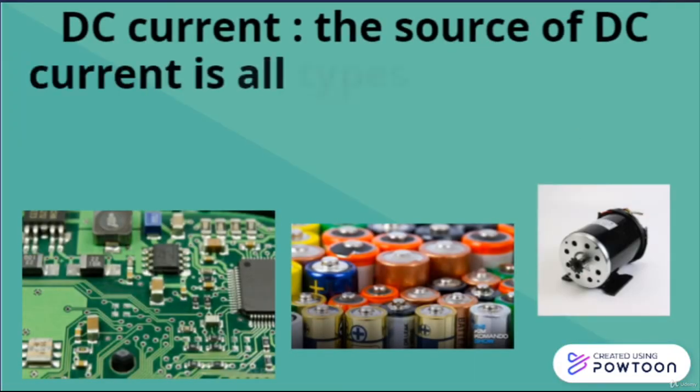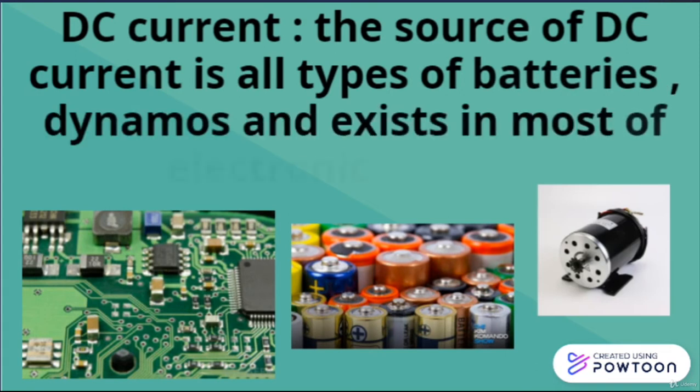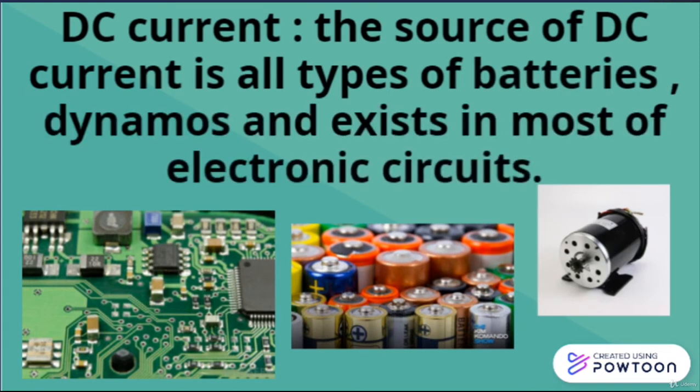The DC current, the source of DC current is all types of batteries, dynamos, and exists in most of electronic circuits, as in the images.